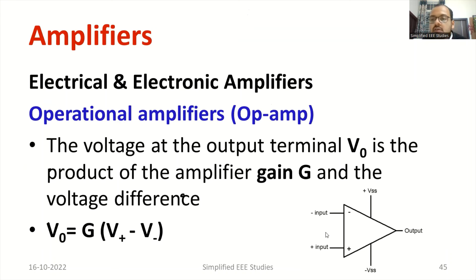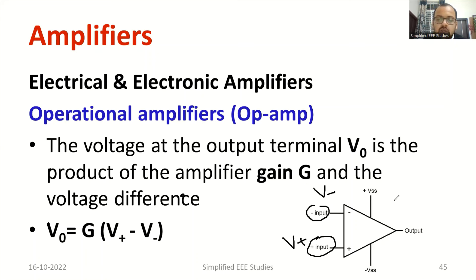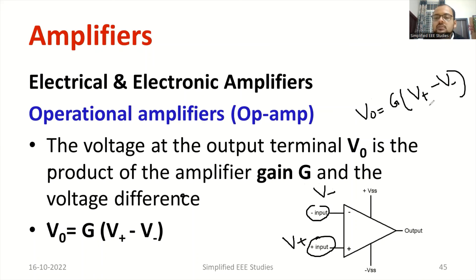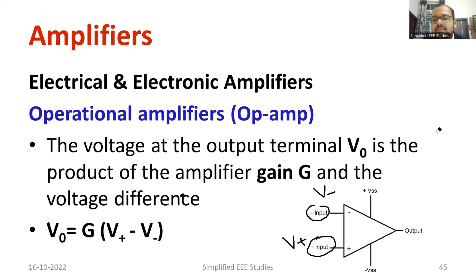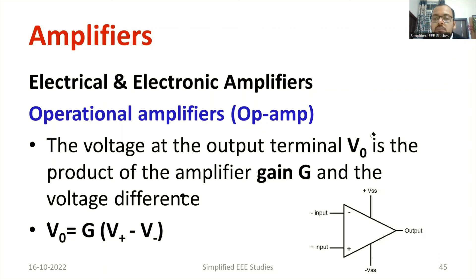The operational amplifier compares two inputs. We have the inverting input, which we call V minus, and the non-inverting input, which we call V plus. The output can be written as V0 = A × (V+ − V−), where A is the gain. This is why we call it a differential amplifier — the difference of the two input voltages reflects in the output. While computing the output voltage, you must consider the gain as well as the difference between the input voltages.